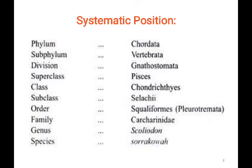Phylum Chordata has sub-phyla: Urochordata, Cephalochordata, and Vertebrata. In the case of the vertebrates, the notochord is replaced — they have a special covering, protected under vertebrae. There are two divisions: Agnatha and Gnathostomata. Stomata means opening, so here we consider the mouth — Gnathostomata means they have two jaws in their mouth.